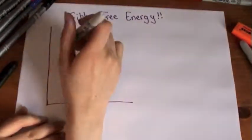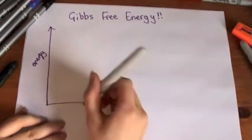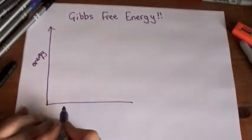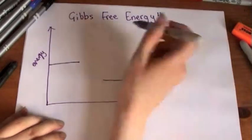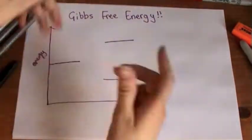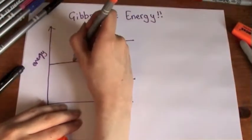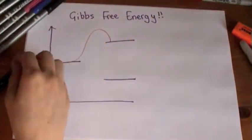So when we look at enthalpy, we normally draw a reaction profile, so this would be energy, and then this is the progress of reaction or the reaction coordinate, but that just means how far into the reaction have we gone.